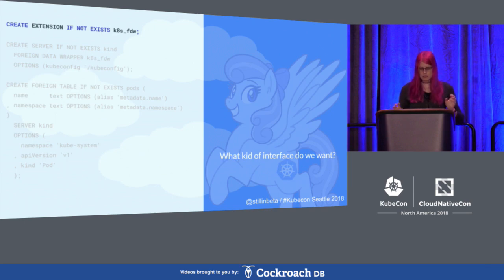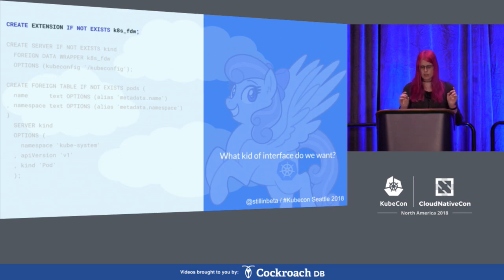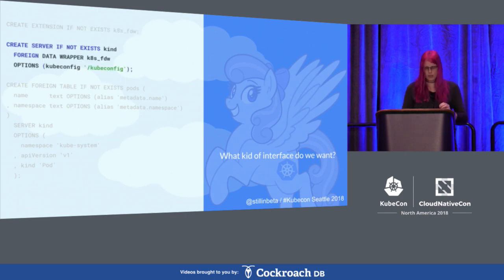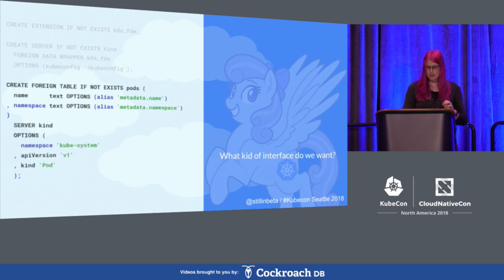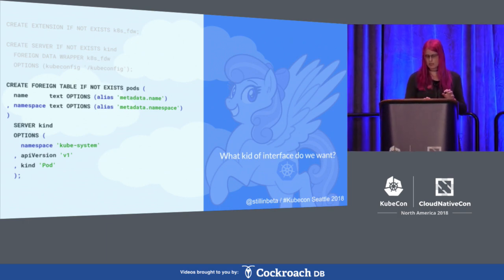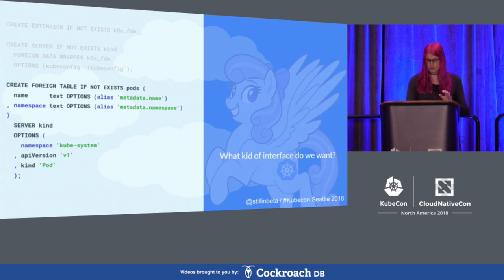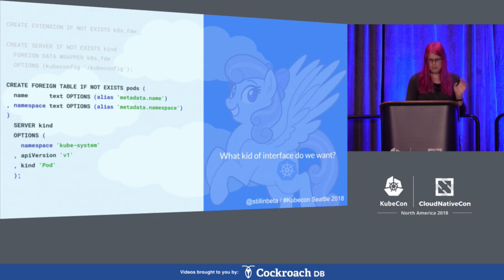I'm going to gloss over the days of debugging segfaults, because this is a five-minute talk, and skip ahead to where it's actually working. The first step is that we install the library. We do this by calling create extension inside Postgres, which tells it to load the object file. Then we can create a server, which for us just means a cluster. I pass in a kubeconfig so that we can actually access it. Then we create a table — this is pretty freeform, you can have as many or as few fields as you'd like. I'm starting off with name and namespace. The alias option tells our wrapper which fields to retrieve from the Kubernetes object for those columns. We use the options field at the bottom to say what kind of objects we're looking for — in this case, pods — and we're going to use the kube-system namespace, because I couldn't be bothered to make an example, so this is just kubeadm.